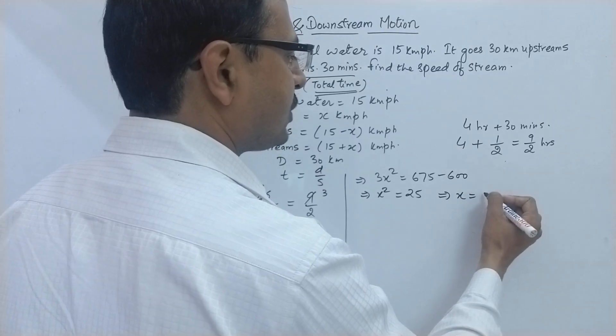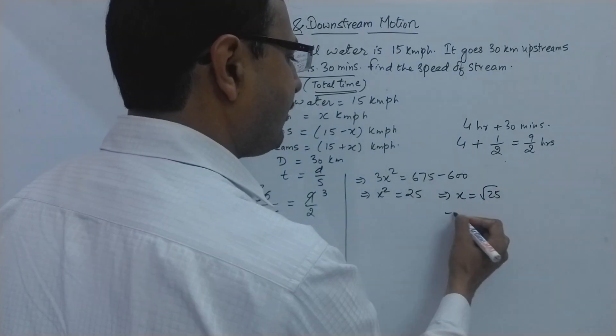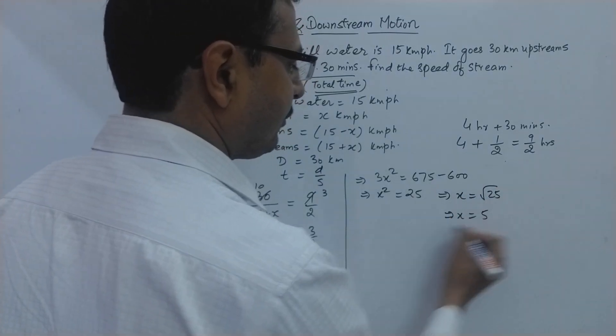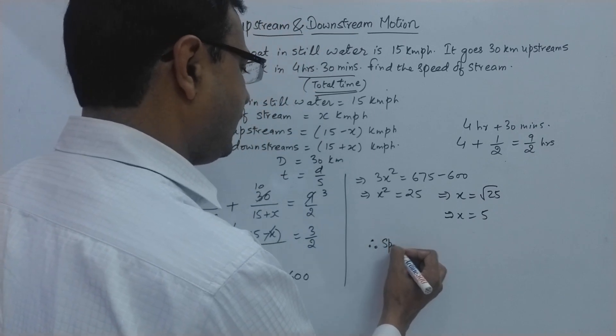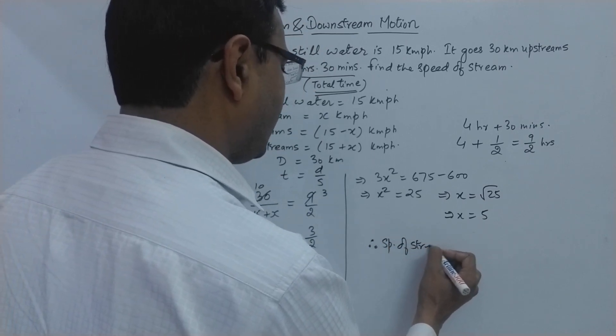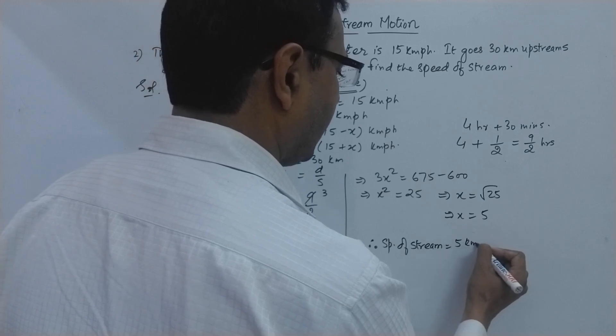3x square comes out to be 675 minus 600. Thereby giving you the value of x square 75 upon 3, 25. So the value of x comes out to be square root of 25 means 5. Therefore the speed of stream comes out to be 5 kilometer per hour.